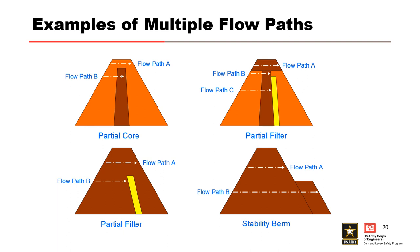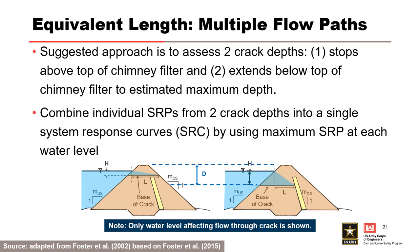Flow path C is concentrated leak erosion through the thin impervious core and has a filtered exit at the incline chimney filter. At the bottom right, this dam has no filters, and the downstream berm lengthens the flow path for concentrated leak erosion. The crack depth D may span two different flow paths. The suggested approach is to assess two crack depths individually: first, the base of the crack is at the top of the incline chimney filter, and second, the base of the crack extends below the top of the incline chimney filter to the maximum crack depth. The equivalent flow path length varies for each scenario. The individual system response curves from two crack depth scenarios can be combined into a single system response curve by using the maximum system response probability at each water level.